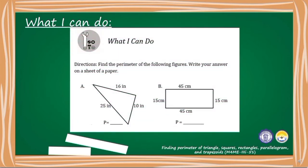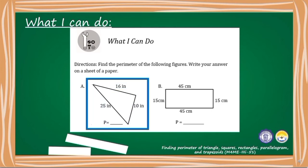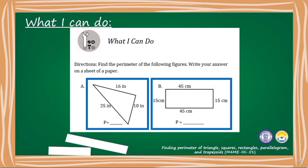Find the perimeter of the following figures. Write your answer on a sheet of paper. A scalene triangle which measures 16 inches, 10 inches, and 25 inches. And a rectangle which measures 15 centimeters, 45 centimeters, 15 centimeters, and 45 centimeters. The perimeter of the scalene triangle is 51 inches, and the perimeter of the rectangle is 120 centimeters.